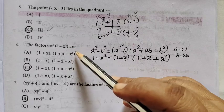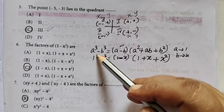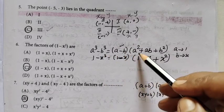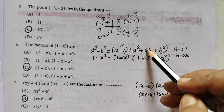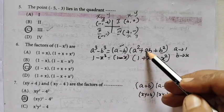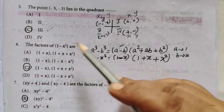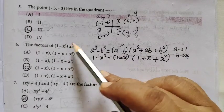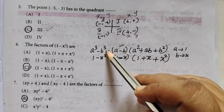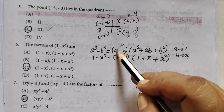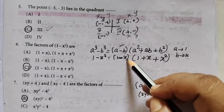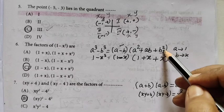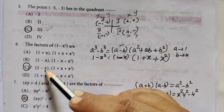Question 6: The factors of 1 minus x cubed are... This is a cubed minus b cubed formula. a cubed minus b cubed equals (a - b)(a squared plus ab plus b squared). Using the formula: 1 minus x cubed equals (1 - x)(1 squared plus 1 times x plus x squared) equals (1 - x)(1 plus x plus x squared). So the answer is C.